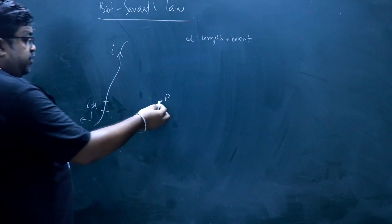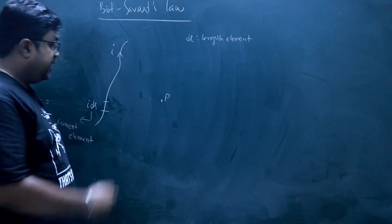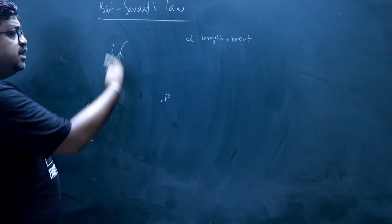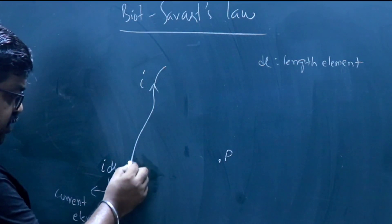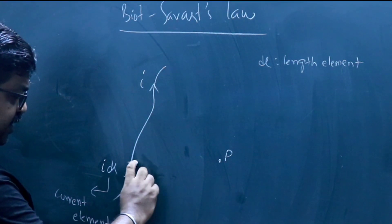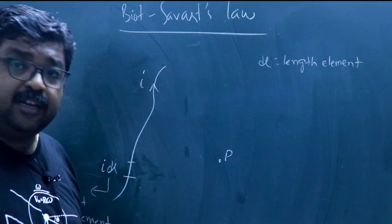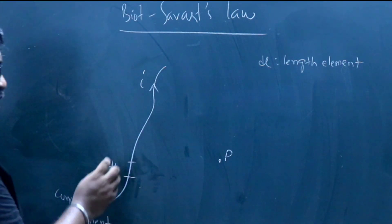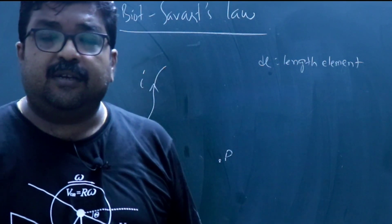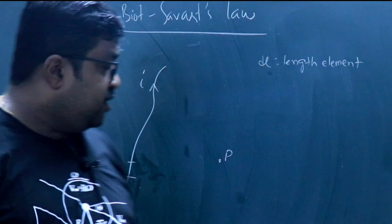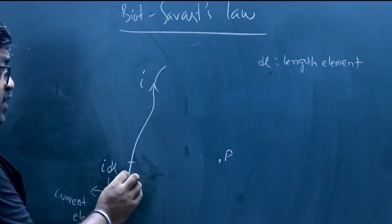We are taking one small element and for this small element we will calculate the strength of the magnetic field, then integrate it so that we can calculate the resultant magnetic field for the entire conductor. Now, current i is a scalar and dl is a length element — separately both are scalar quantities and don't have any direction.